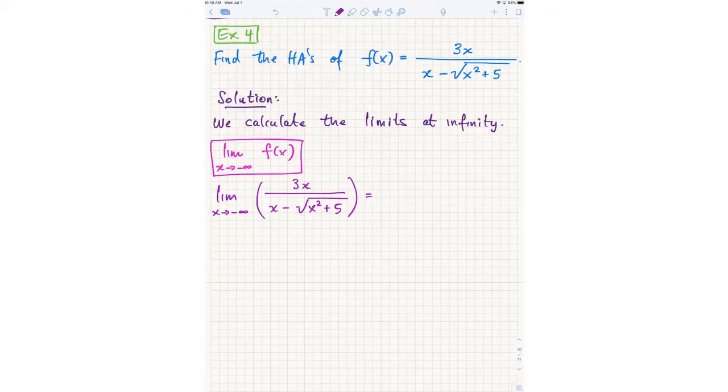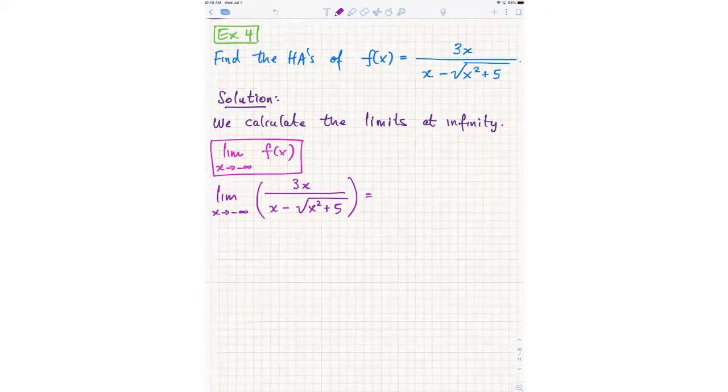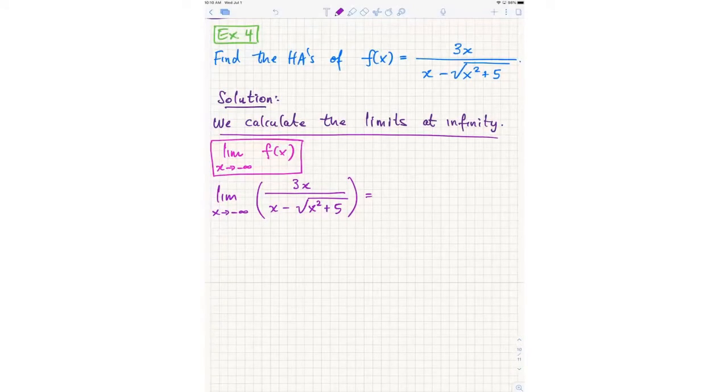The first thing you discussed was how do you find the horizontal asymptotes of a general function. That always means calculate the limits at infinity, because those will each possibly give you one horizontal asymptote.